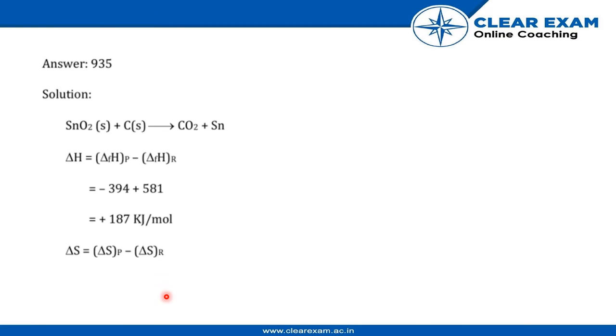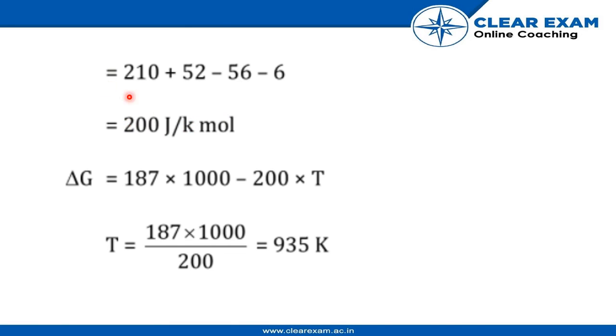Delta S equals delta S of products minus delta S of reactants. By solving the equation, we get 200 joules per kilomole. Delta G equals